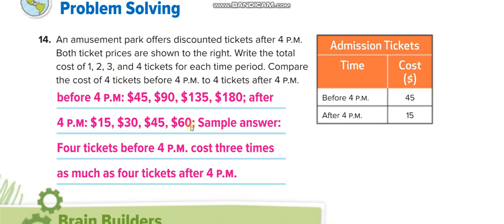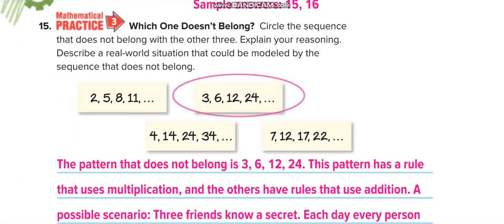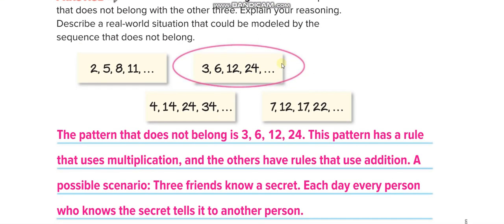Circle the sequence that does not belong with the other three. This one is adding, plus 3, plus 10, plus 5. But this one is times 2: 3 times 2 is 6, 6 times 2 is 12, 12 times 2 is 24. So this one is different because this one is using multiplication.